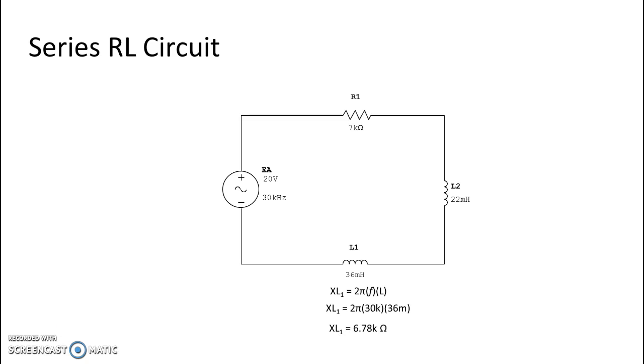And then we do the same process over on L2. We look for inductive reactance of L2 and we put in our pieces which are 2 pi times 30,000 times 22 milli and we get an ohmic value for L2 of 4.15k ohms.